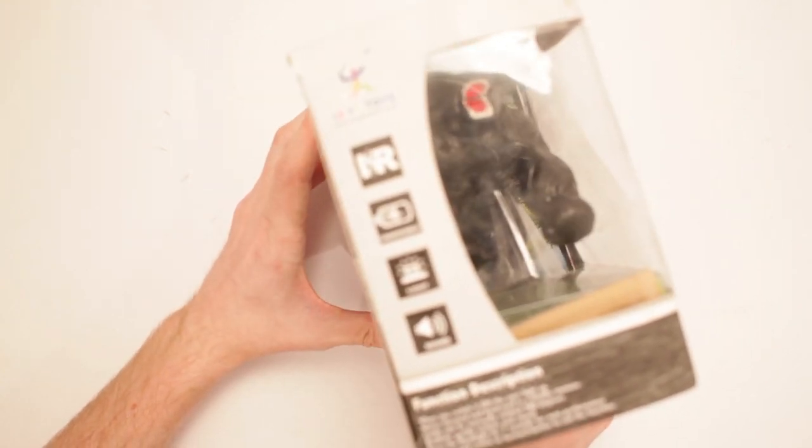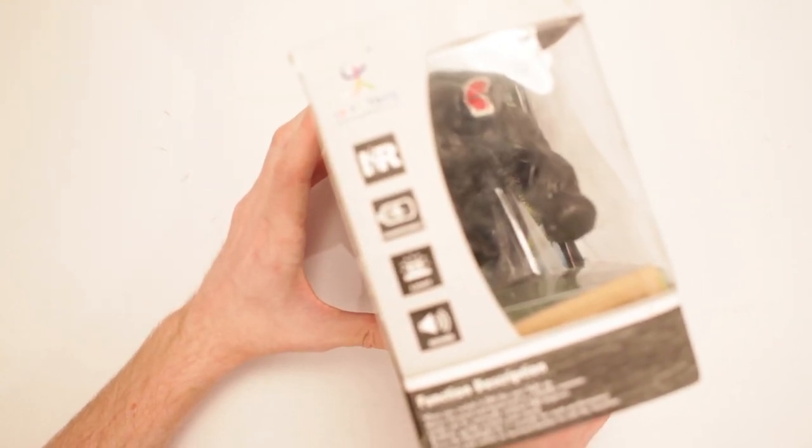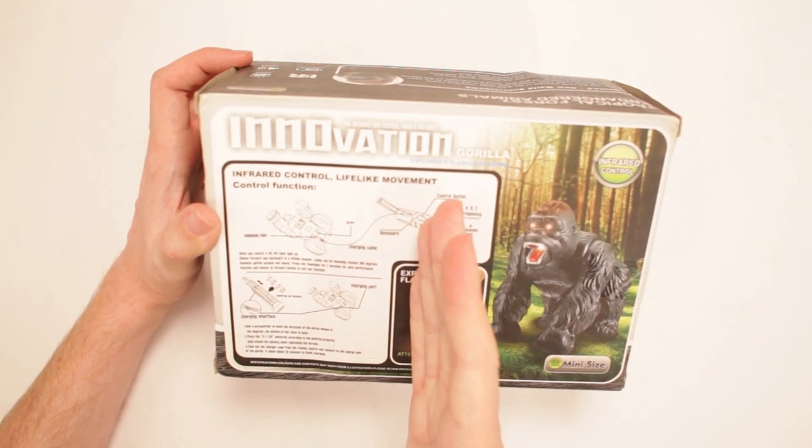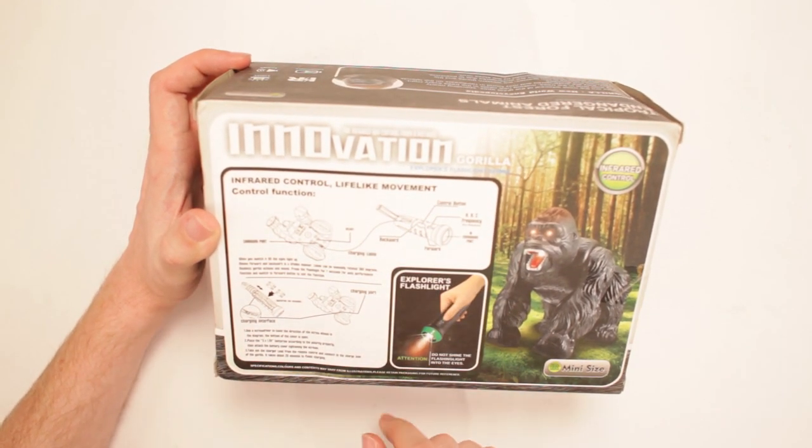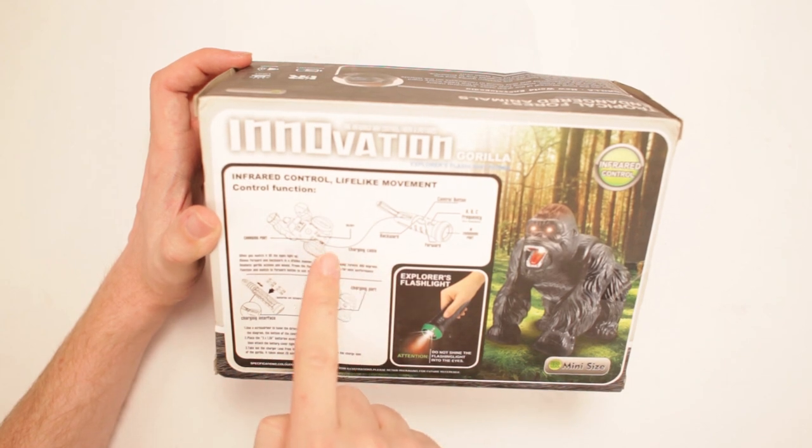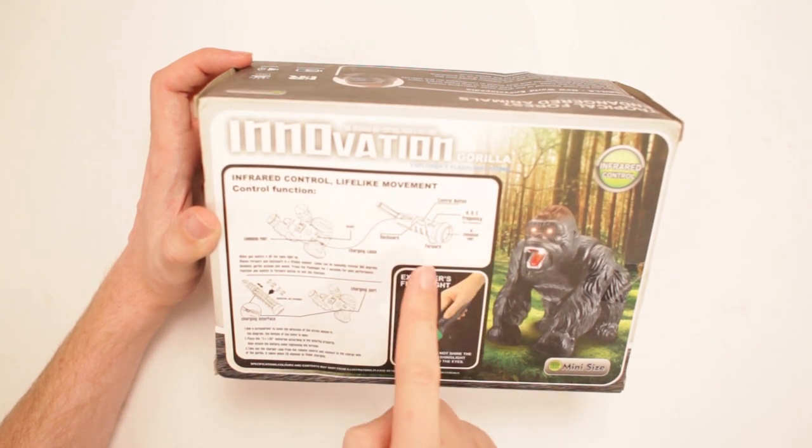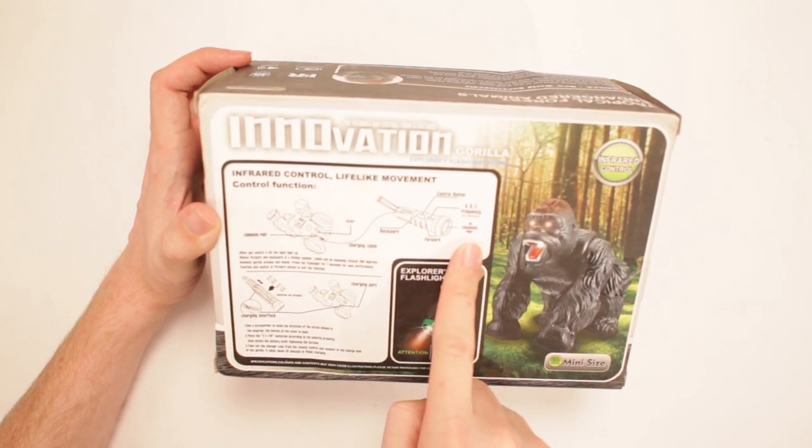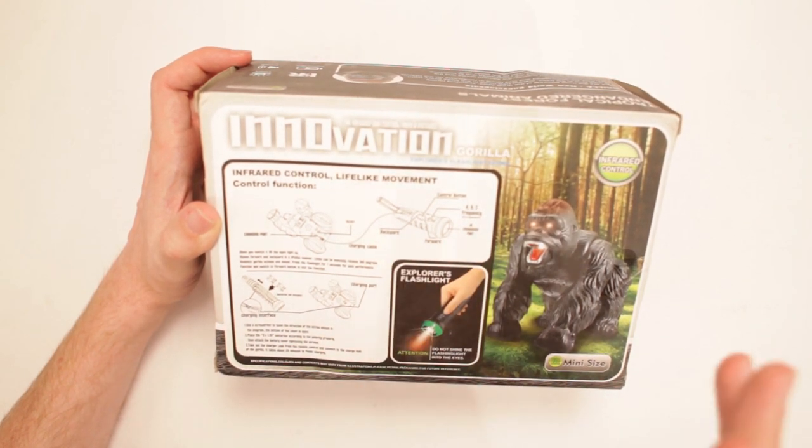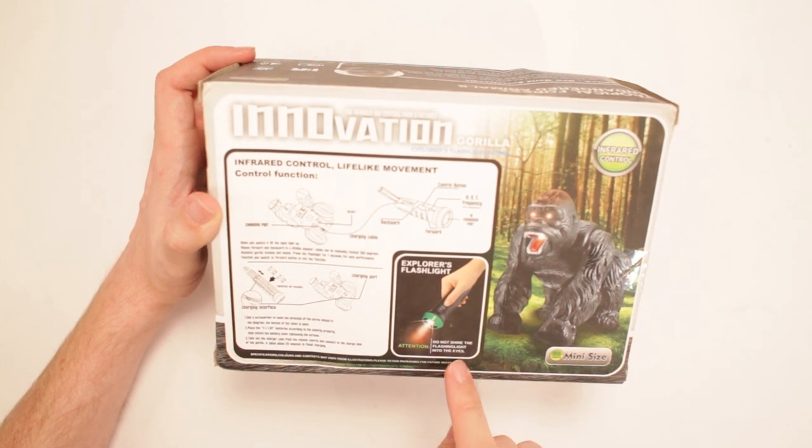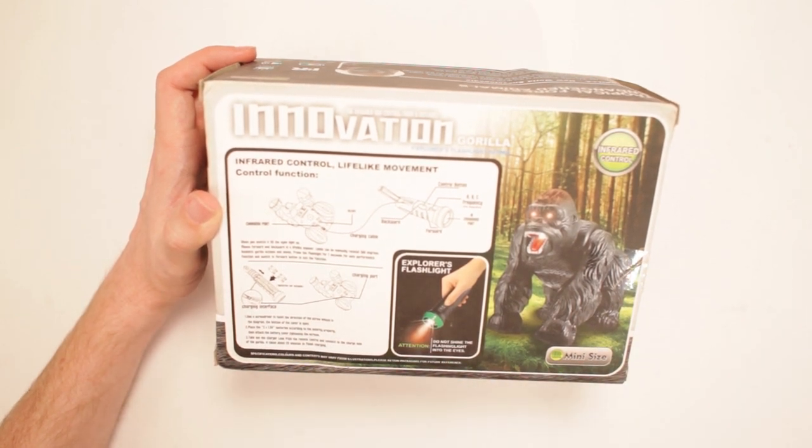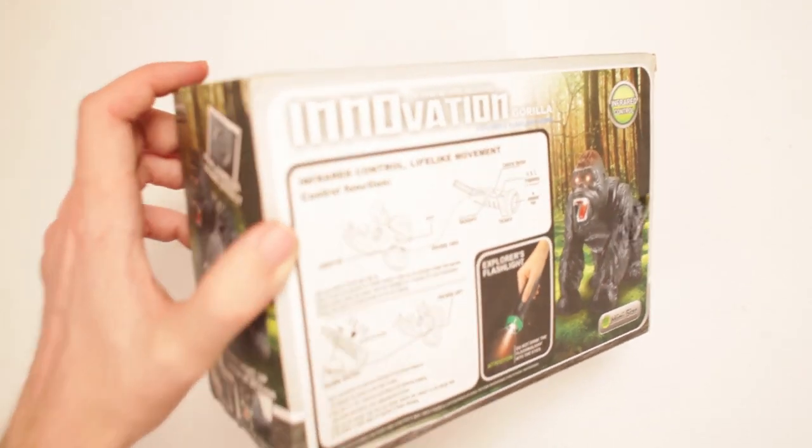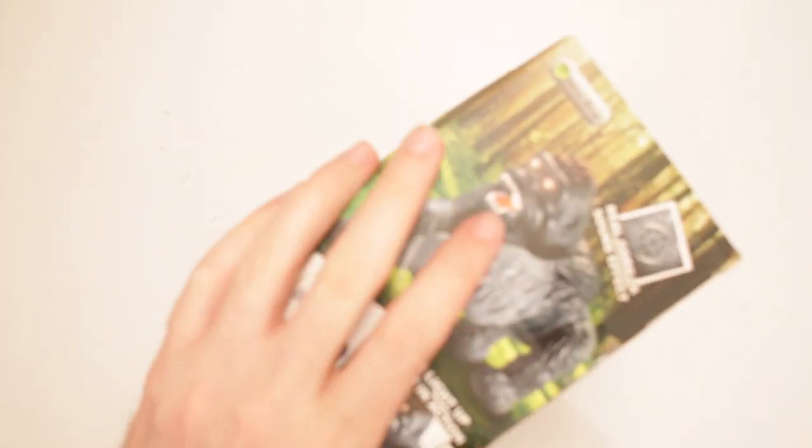It's made by LiYu Toys, LiYu Toys Industrial Co. Ltd. Wow, what do we got here? So it's infrared control, lifelike movement control function. So there's a charging port, a charging cable, on and off switch, and then this flashlight here's got all sorts of stuff: control buttons, different frequencies, infrared emission port, forward, backward, all kinds of stuff here. So do not shine the flashing light into the eyes, unless it's the gorilla. And boy does he look mad, especially when I shine a light on his face over and over again.